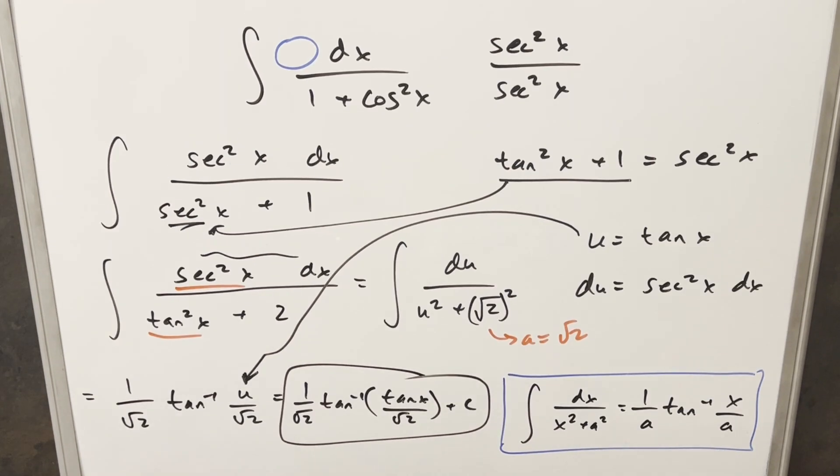So there you have it. Quick integral multiplying by secant squared x over secant squared x. Thanks everyone for watching. Have a good day.